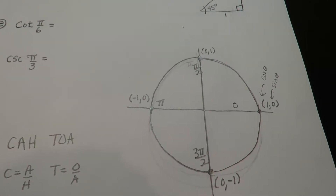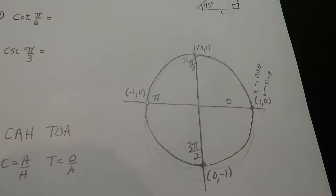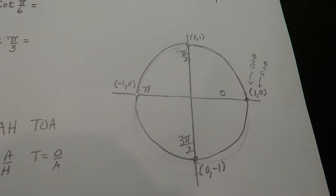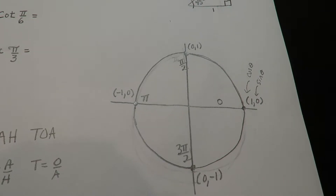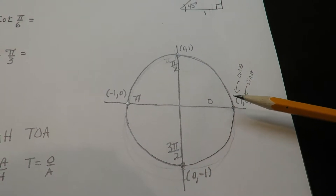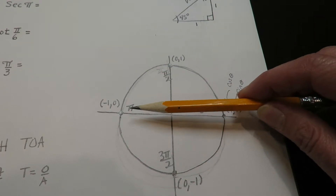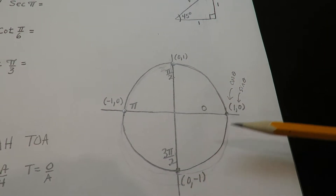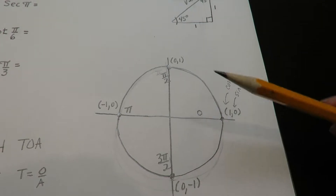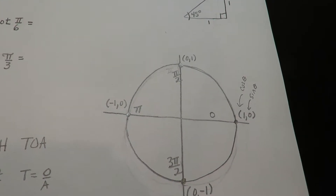Down here is the unit circle. This is a good tool to use when you're evaluating a quadrantal angle. A quadrantal angle is an angle that falls on one of the axes. So if it falls here at zero, or at pi over two, or at pi, or three pi over two, and on and on — you could also count the rotations like three pi, or five pi, or seven pi over two.